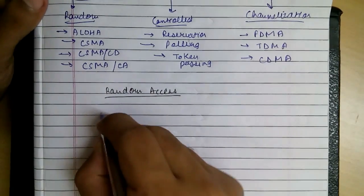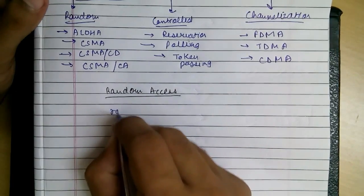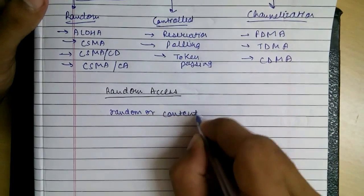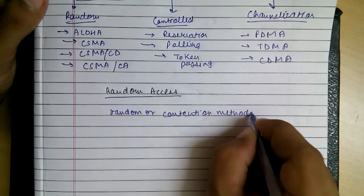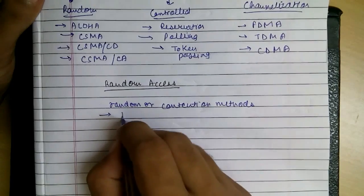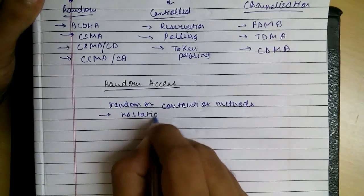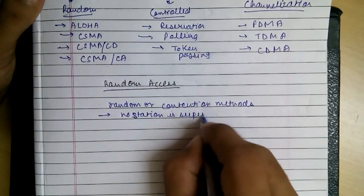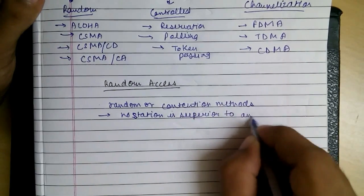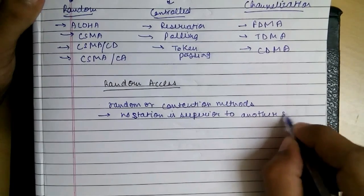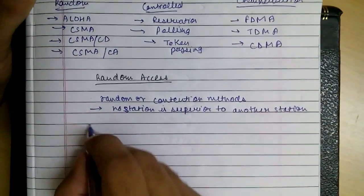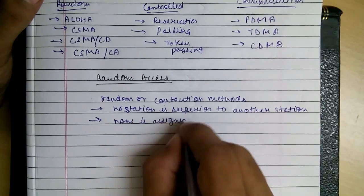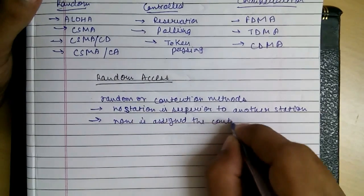The methods in random access are called contention methods. In these, no station is considered superior to another station, and none is assigned control over any other station.